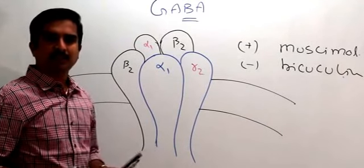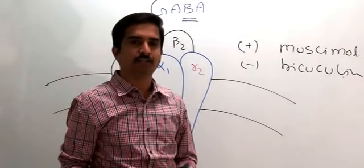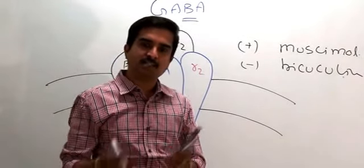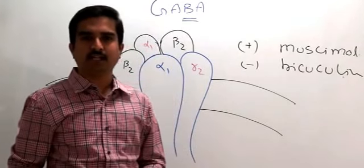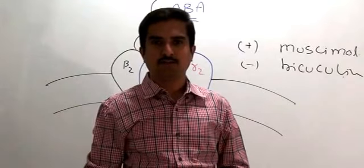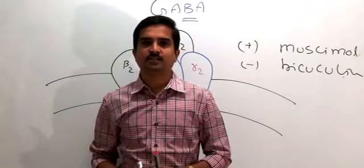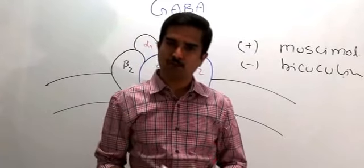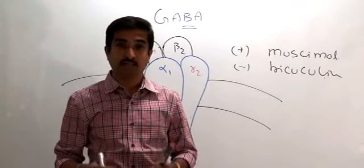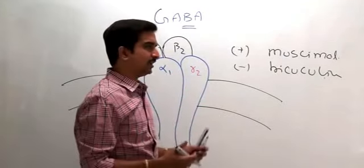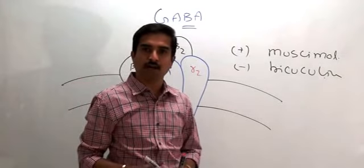At the GABA-A receptor there is a GABA binding site and also modulatory sites. There are separate binding sites for barbiturates and benzodiazepines, as well as for reverse antagonists and other agonists. These are the different accessory binding sites of the GABA-A receptor.